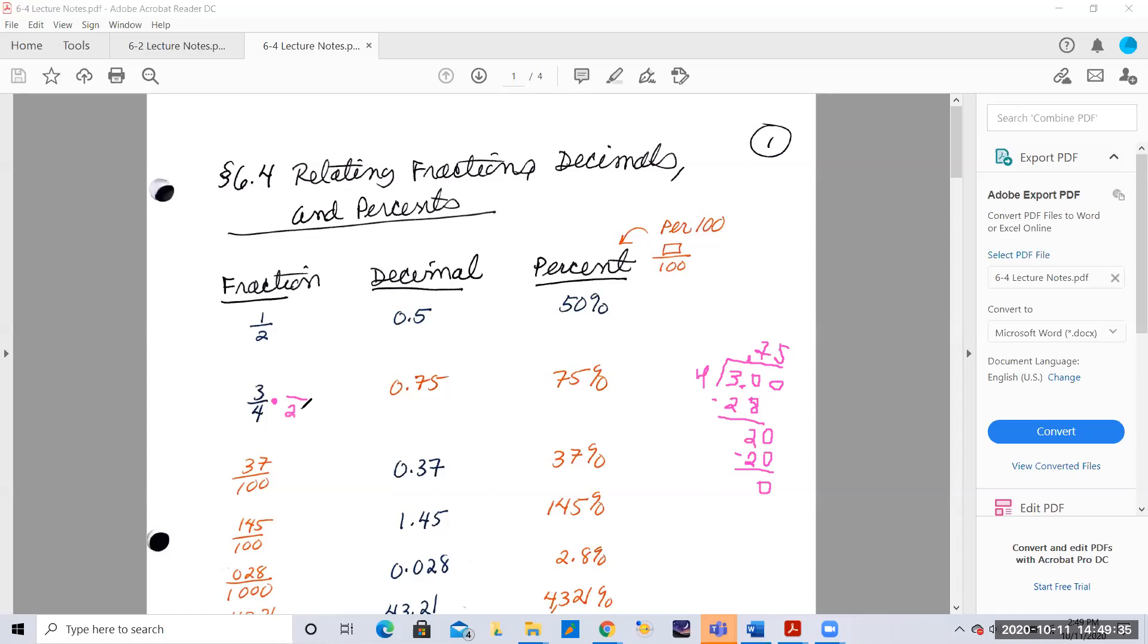So I can multiply the bottom by 25, and then you multiply straight across and you get 75 one hundredths. Once you know per 100, or here 75 hundredths, then it's 75 percent, 75 per 100.